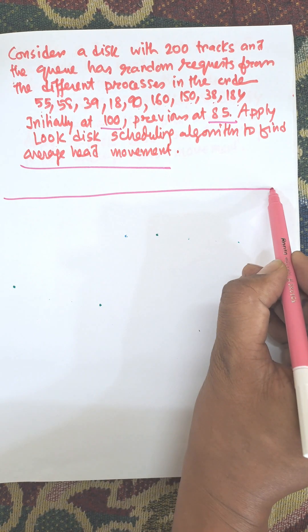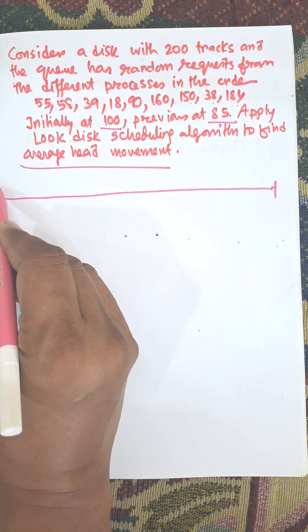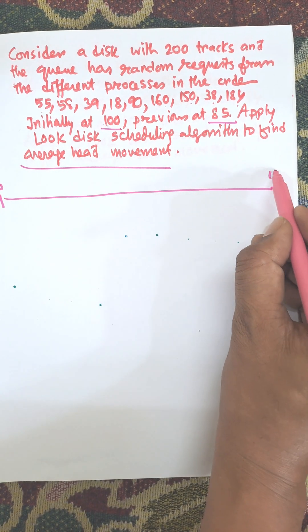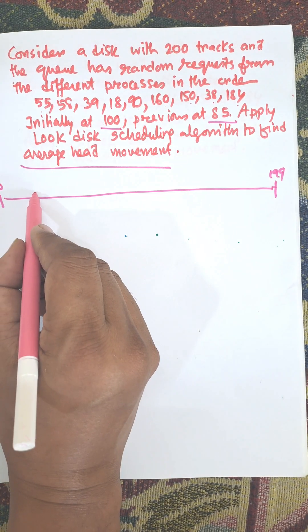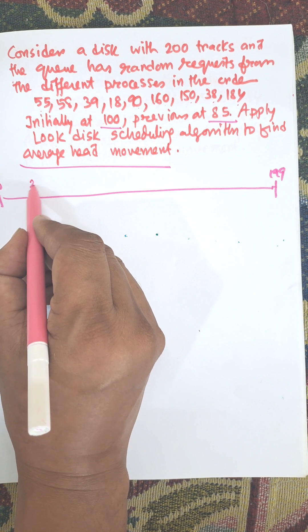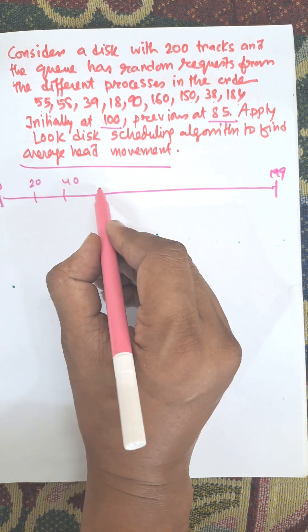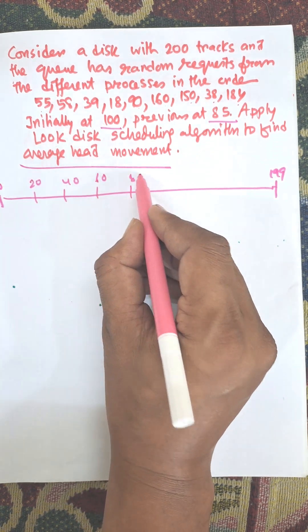First of all, we need to draw the total number of tracks, that is 0 to 200. Last one is 199 and we divide the track. This one is 20, 40, these are the markers: 60, 180.